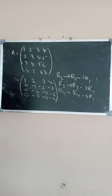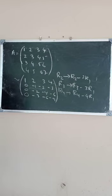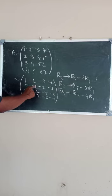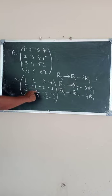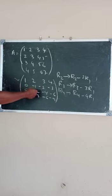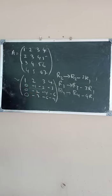Next step: check whether the second row, second element is non-zero. If it is zero, we check the other elements. In this case the second row, second element is non-zero — that is minus 1. We make the other elements in that column below the second row as zero.